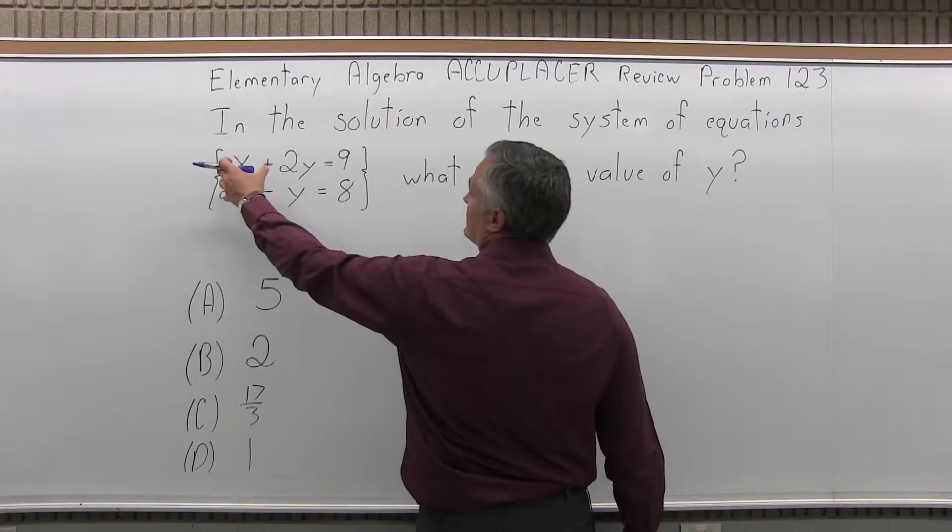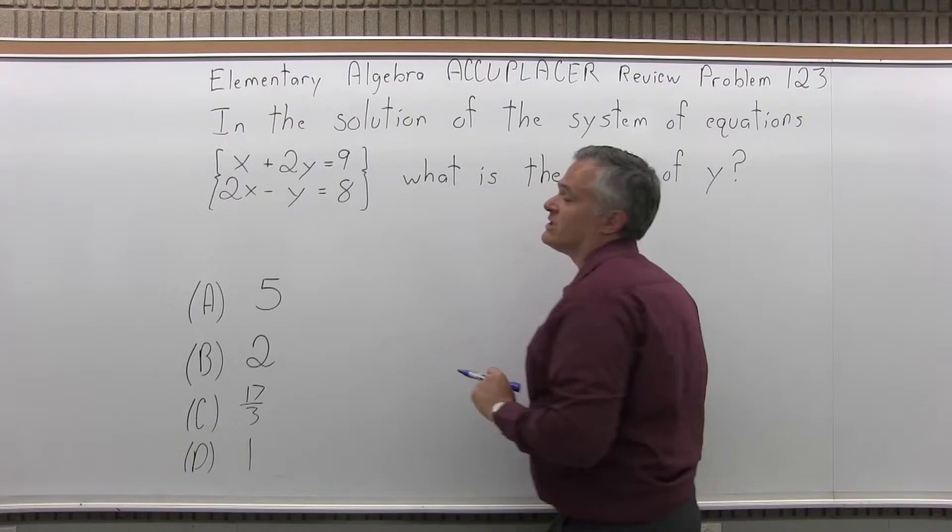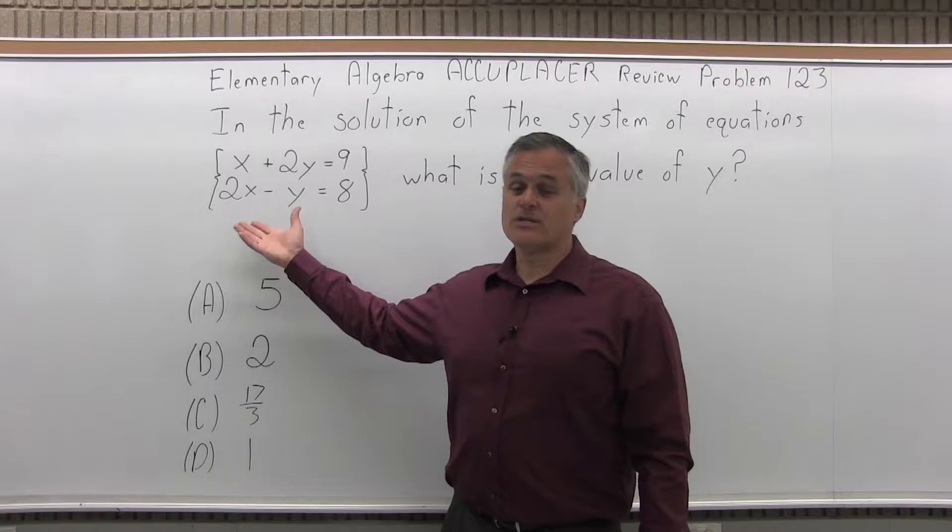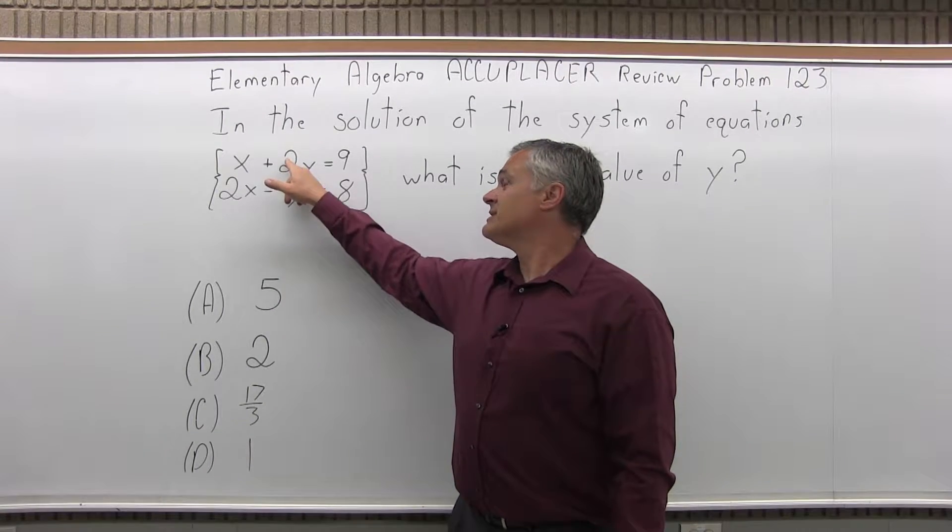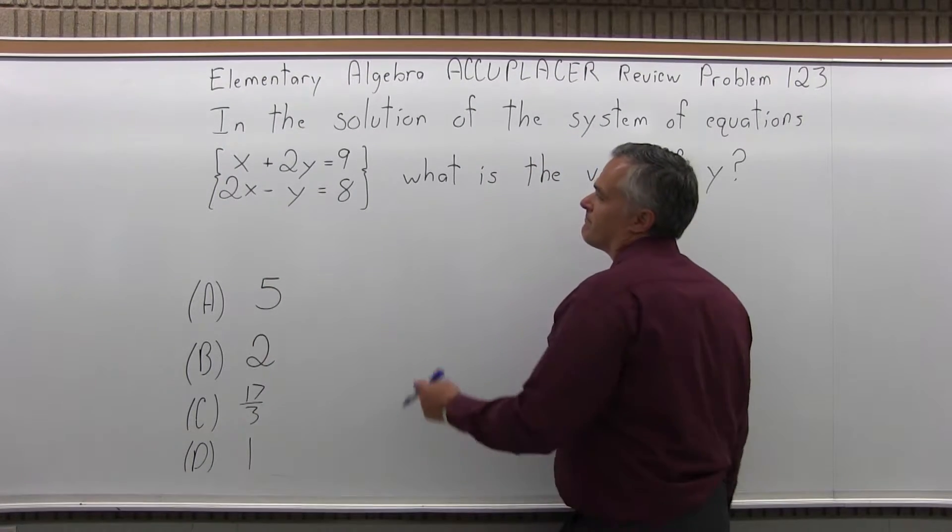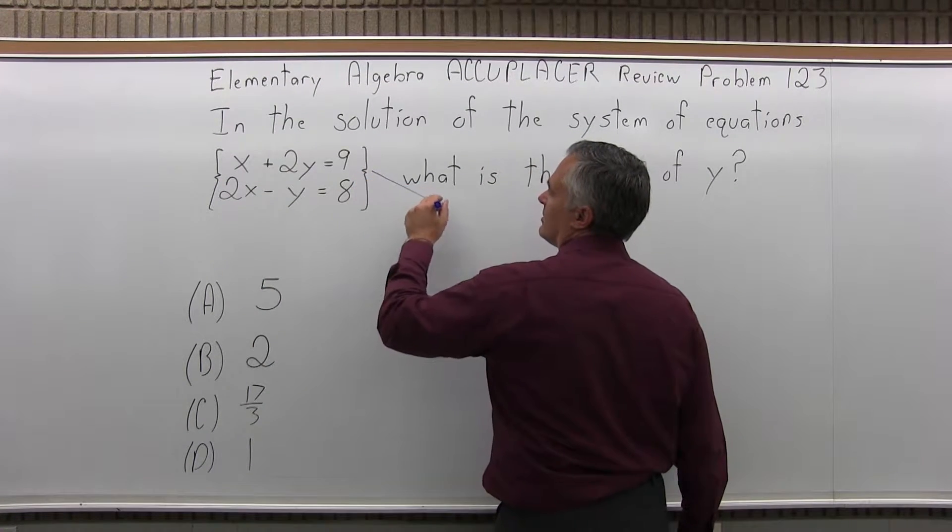What I'd like to do is cancel one of the variables when I add the two equations together. You could cancel the x's or the y's. It doesn't matter. It'll get you to the same answer in the end. I like to cancel the y's because they already have opposite signs. It's going to make it a little bit easier. It's really about the same either way.